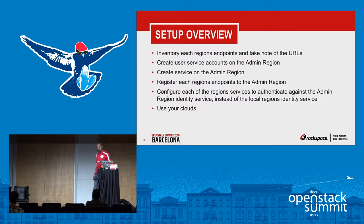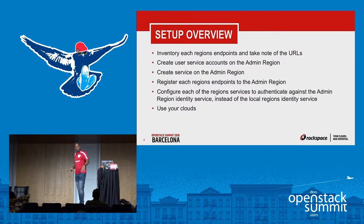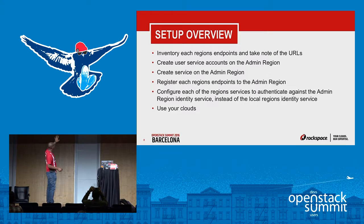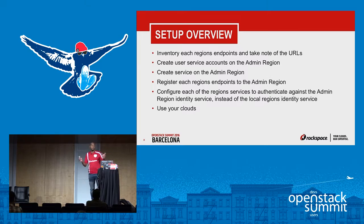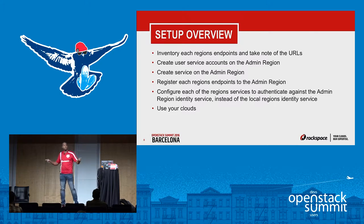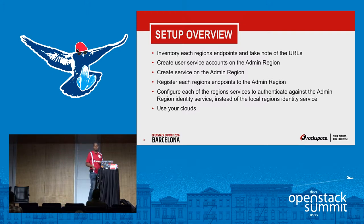These are the steps to accomplish the architecture. First, inventory your regions' endpoints and note the URLs — you need to take those endpoints of the individual regions and register them on your admin region. The admin region has to know about those other regions and services, and they have to be registered there.